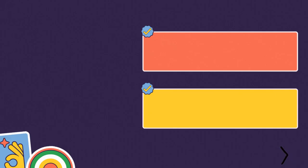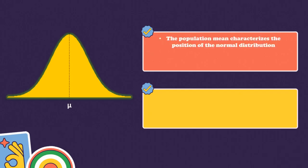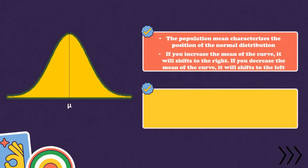There are two factors that affect the normal distribution. First is the population mean — it characterizes the position of the normal distribution. If you increase the mean of the curve, it will shift to the right, while if you decrease the mean of the curve, it will shift to the left.